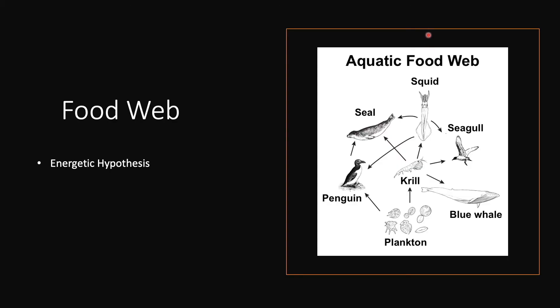The next example is the food web. The bottom-up model is not necessarily universally representative — the food web is actually more representative of the dynamics we see in nature. We're going to look at an aquatic food web as an example. This is an oversimplified image; just imagine many more species and arrows. The plankton is fed on by the krill and the penguin, who is fed on by the seal, who also feeds on the squid — and the squid is also fed on by the penguin. They're all interconnected.